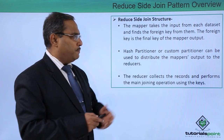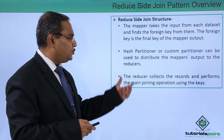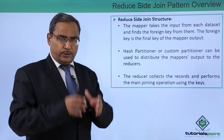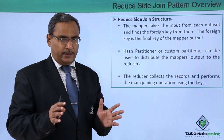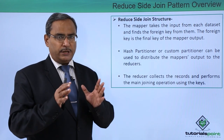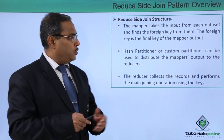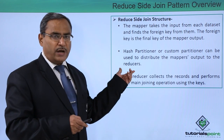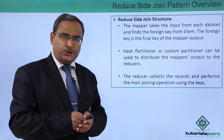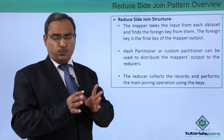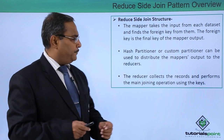Hash partitioners or custom partitioners can be used to distribute the mapper output to the reducers. Sorting and shuffling takes place so that the respective reducer can get the required mapper outputs. Either a hash partitioner or custom partitioner is used so that mapper output gets distributed onto the reducers accordingly.